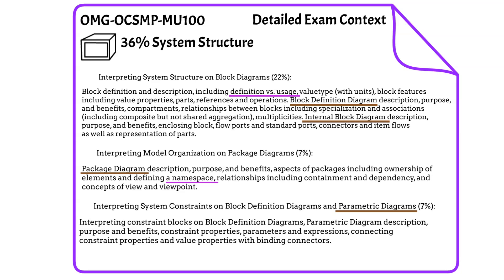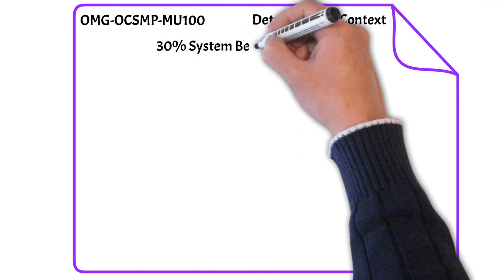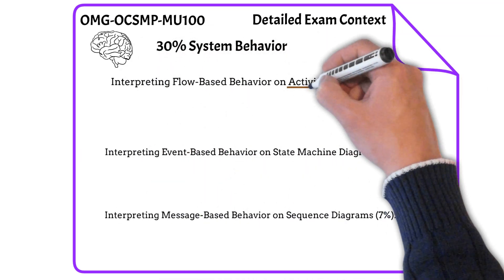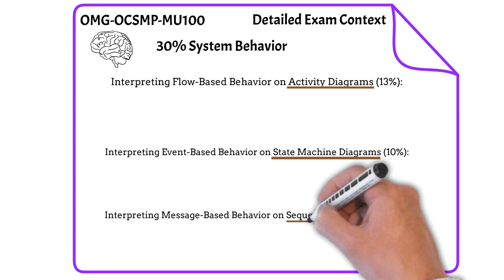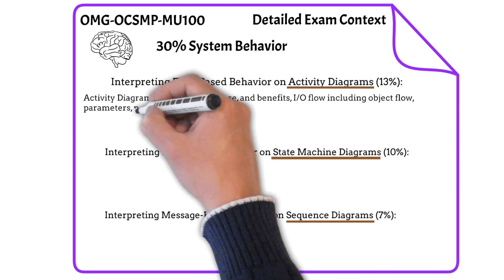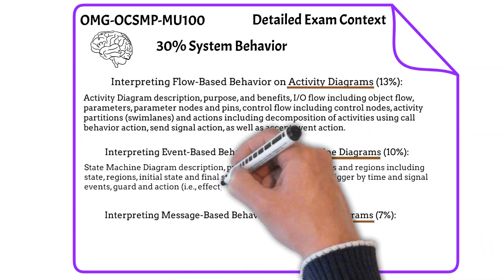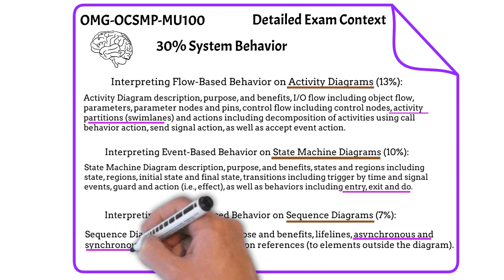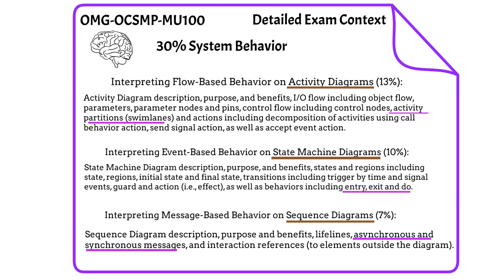There are four behavioral diagrams in SysML and all four will be on the exam. Three are the activity diagram, the state machine diagram, and the sequence diagram. The use case diagram is lumped in with requirements. Key topics include activity partitions in the activity diagram, entry/do/exit behaviors on a state machine diagram, and the difference between asynchronous and synchronous messages on a sequence diagram.